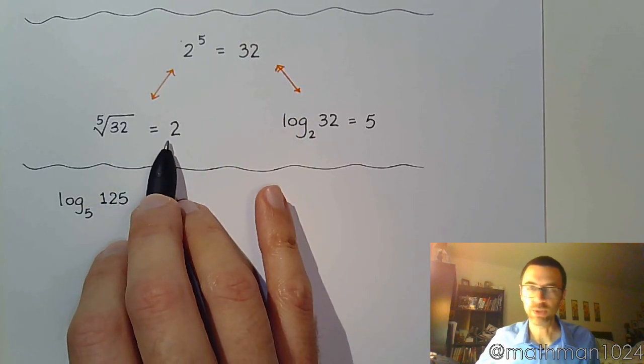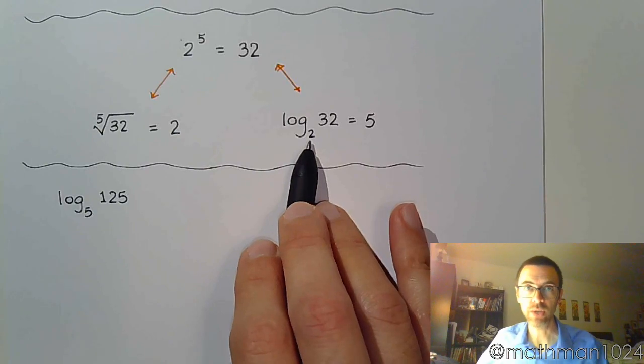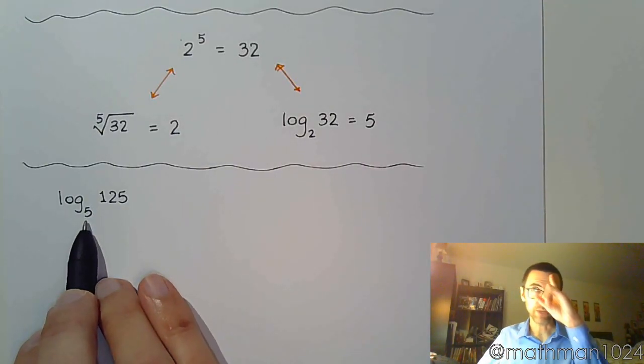Just like up here, that 2 is your base. Of course the answer to the radical was the base, but the 2 is the base for the exponential, 2 is the base for the logarithm. So you know what you're working with. So in this problem the base is 5, so think about 5's.